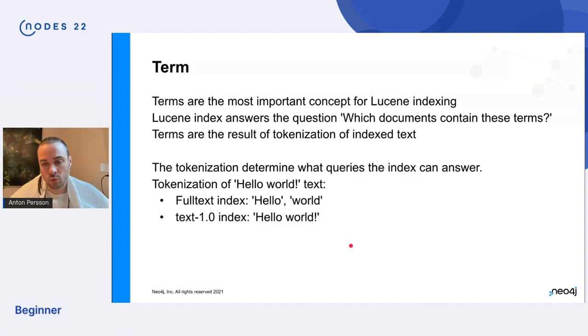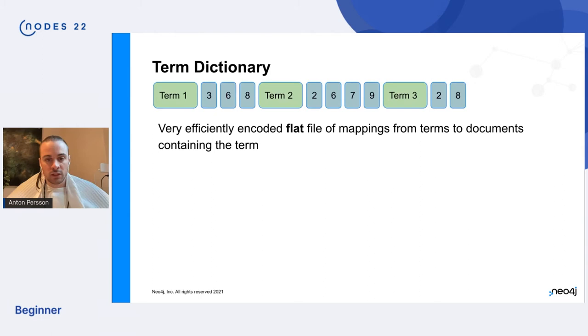We'll talk a little bit more about full text index later on, but for now we don't need to care about that. Okay. So we take strings, we tokenize them into terms and the terms point to documents, which means nodes and relationships. Lucene stores those terms in a term dictionary.